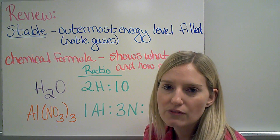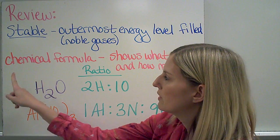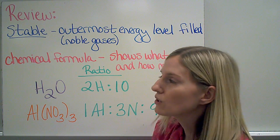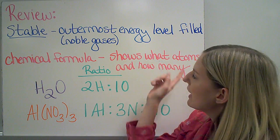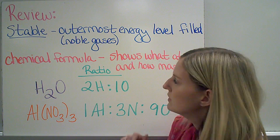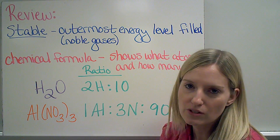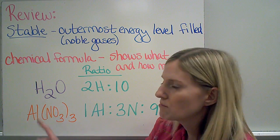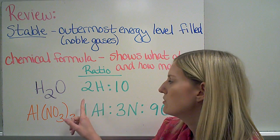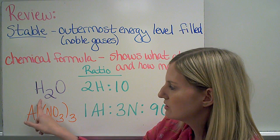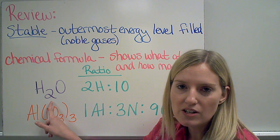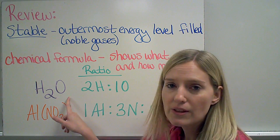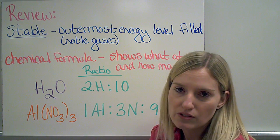We're going to represent different compounds with something called a chemical formula, which we've looked at before. It shows what atoms there are in that compound, as well as how many of those atoms are in each compound. So when I see H2O, that's the chemical formula, and the ratio shows us that there are two hydrogens — I see that from this small number here called a subscript — and that there's one oxygen.